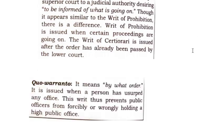The last writ is quo warranto, which means 'by what order.' It is issued when a person has usurped any office. This writ prevents public officers from forcibly or wrongly holding a high public office. If a person is holding a particular office, the court orders quo warranto — meaning by what order are you using that position. These are the different writs that the Supreme Court uses to protect the fundamental rights of the people.